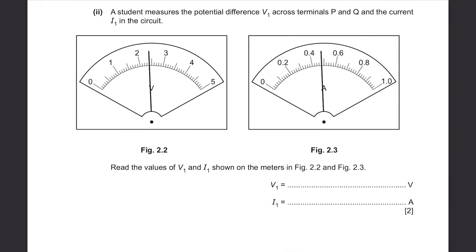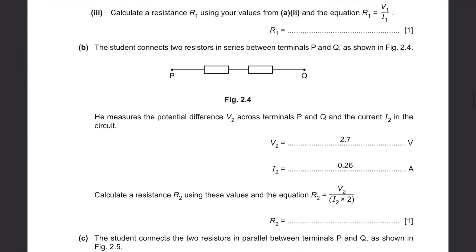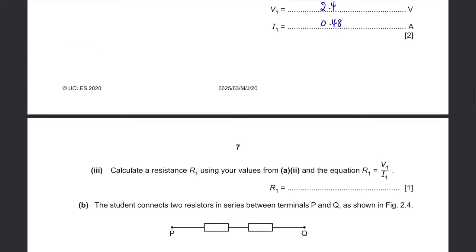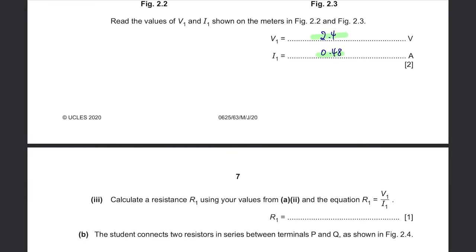A student measures potential difference V1 across terminals P and Q and current I1 in the circuit. Read the values from figure 2.2 and 2.3: V1 is 2.4 Volts and I1 is 0.48 Amps. Calculate resistance R1 using R1 equals V1 over I1: 2.4 divided by 0.48 equals 5.0 ohms. Both values are given to 2 significant figures so the answer is also given to 2 significant figures.